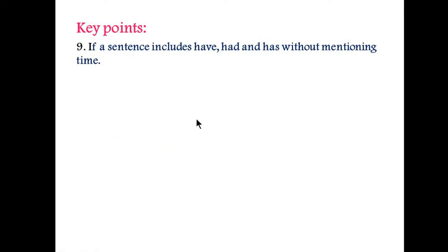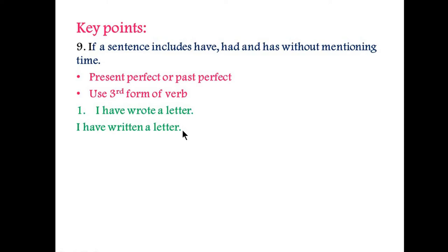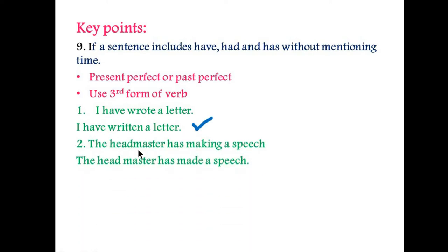Point number nine: if a sentence includes 'have', 'had', or 'has' without mentioning any specific time, then this sentence is present perfect or past perfect tense, and you will use the verb third form. For example, 'I have wrote a letter' is incorrect. 'I have written a letter' is correct — you are using the third form of the verb. The next example: 'The headmaster has making a speech' is incorrect.